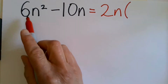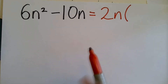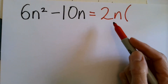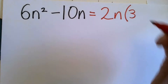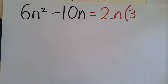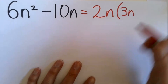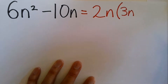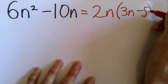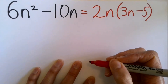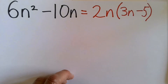And then we're looking at the 6n squared, and thinking about how we're going to get 6n squared by multiplying 2n by something. So we're going to multiply 2 by 3, and then multiply n by n to get n squared — so that would be 3n. And then to get minus 10n, it's going to be minus: all we need to do is multiply 2 by 5, and 2n times 5 gives us minus 10n.